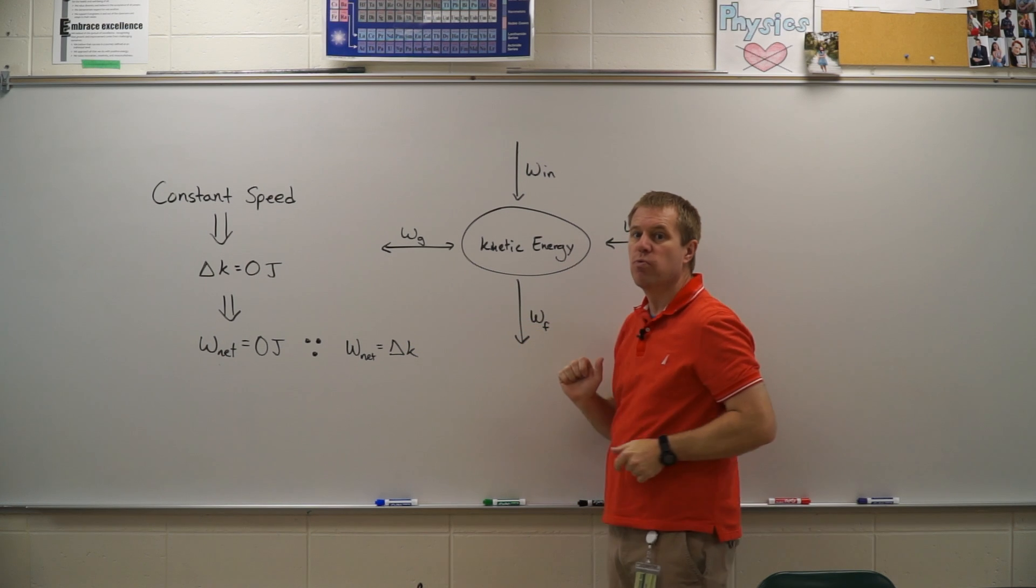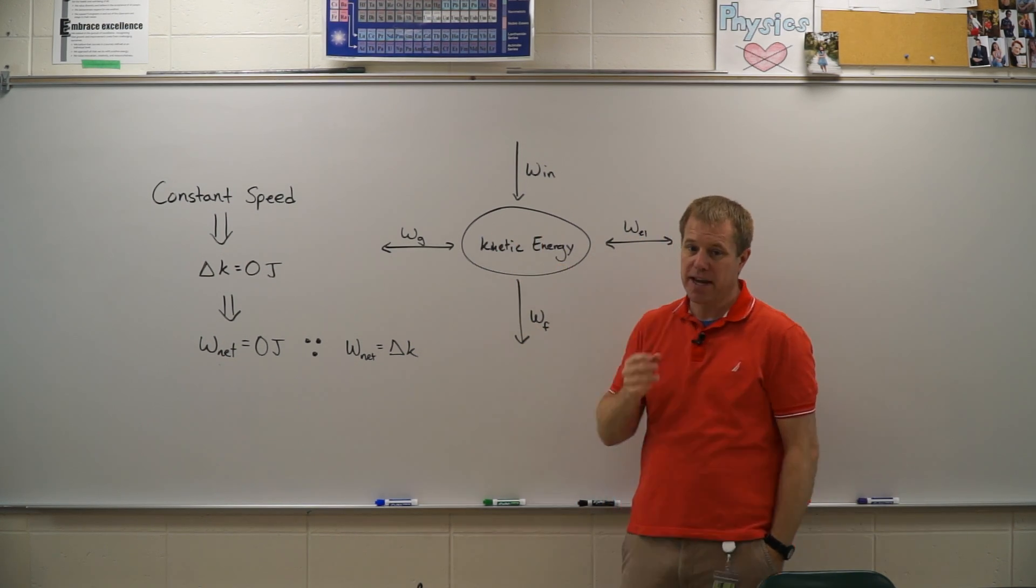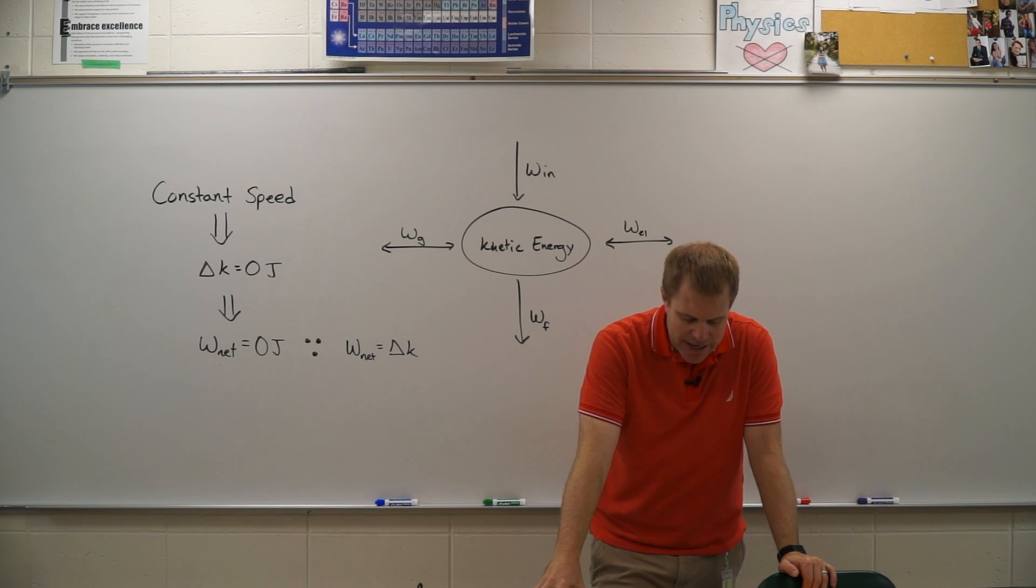Negative work removes energy from that kinetic energy. So the example here: a gardener slides a three kilogram flat of geranium seedlings at a constant speed two meters across the level table with a coefficient of friction of 0.3. What is the network done on the flat?